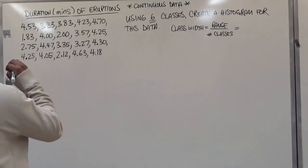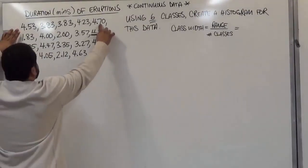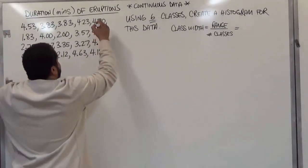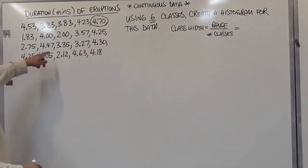So our highest value on this table appears to be 4.70. So let's circle that in. The high is 4.70. The low is 2.0. Then we have 1.83, the only one with a one.